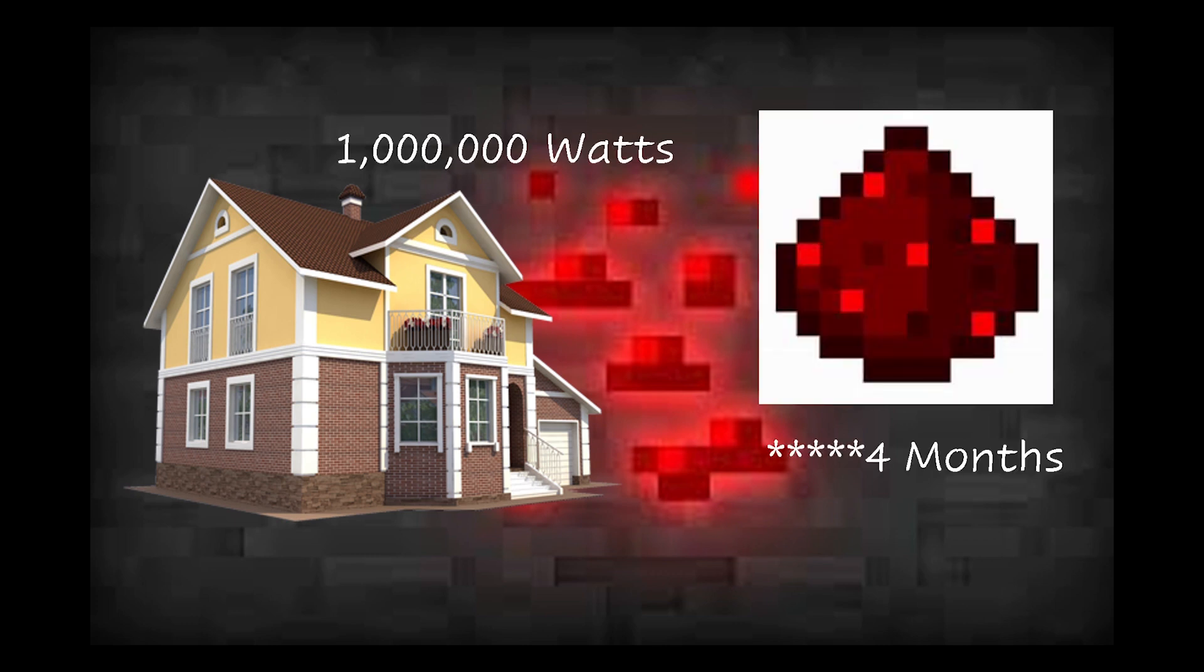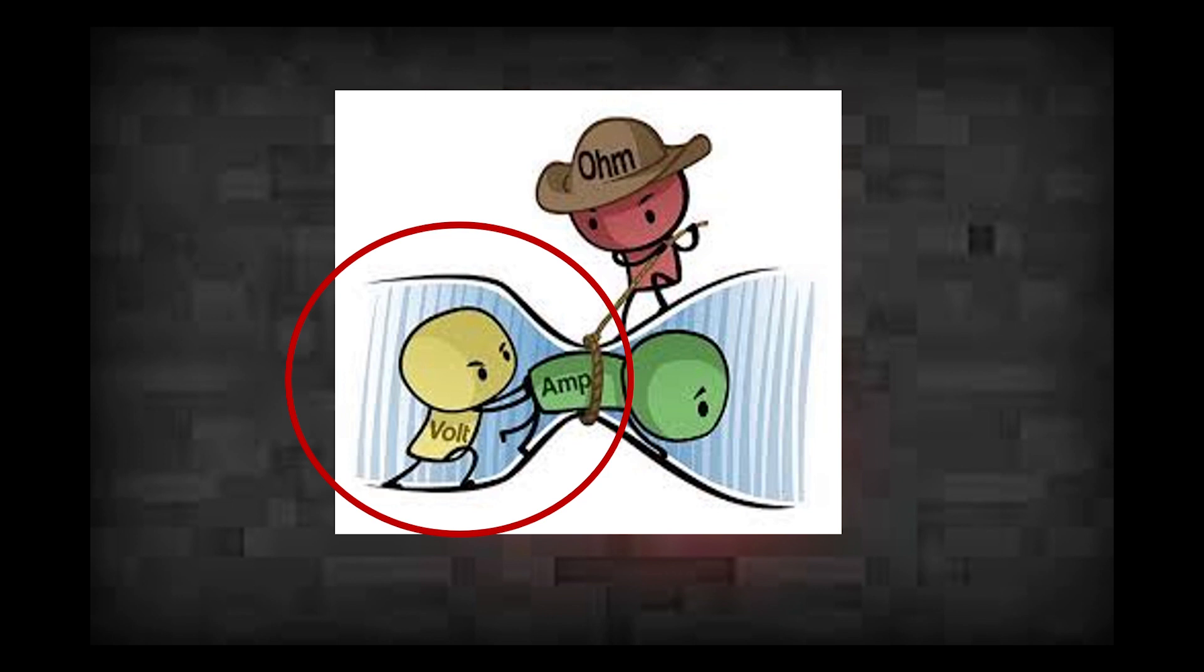But still, we don't really care about the power output. We want to think of redstone in the context of a power generator. And of course, with that there is the resistance in the wire that we need to consider. We want the voltage before it passes through the wire. This is what we can use to power the world.